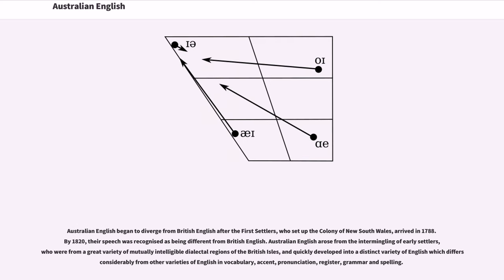Australian English began to diverge from British English after the first settlers, who set up the colony of New South Wales, arrived in 1788. By 1820, their speech was recognized as being different from British English.